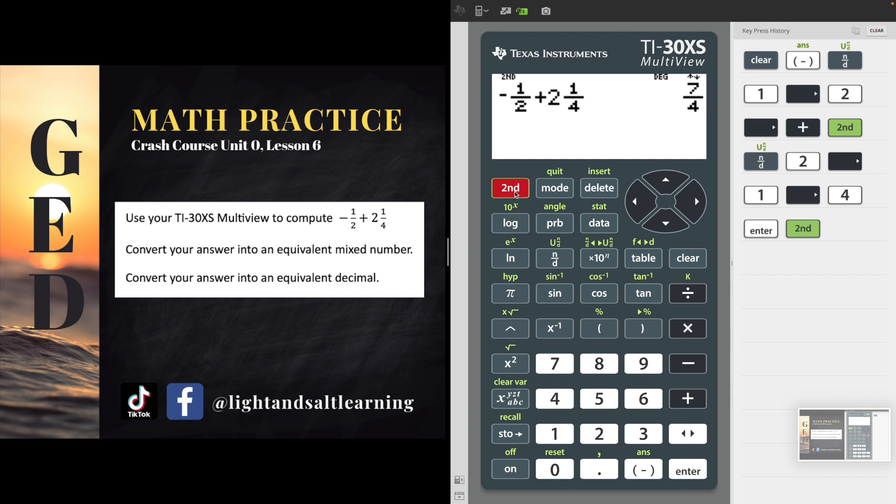And so again, that's in green, so I'm going to hit the second key, and then I'm going to hit that N over D to UN over D, and it converts back and forth from mixed numbers to impropers and the other way around. And so we can see that seven-fourths is the same as one and three-fourths.